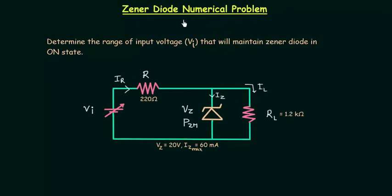In this lecture I will solve one numerical problem based on Zener diode. We need to determine the range of input voltage VI. VI is the variable input voltage that will maintain Zener diode in ON state. This Zener diode must be ON and for this we have to determine the range of input voltage VI.